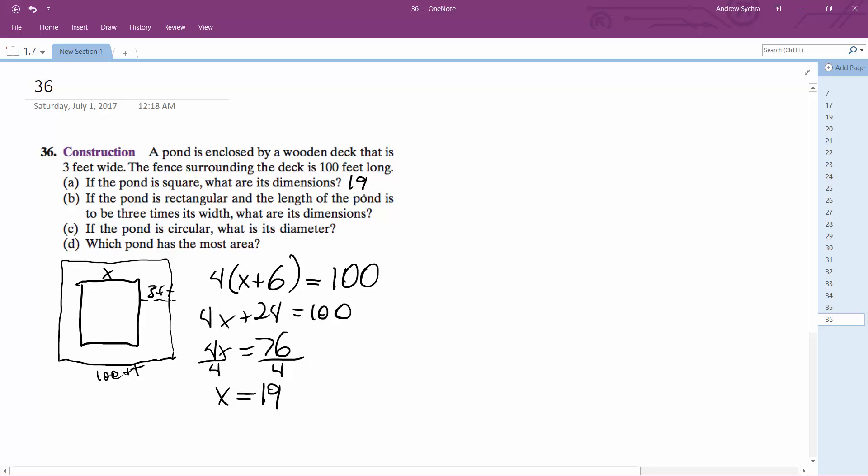If the pond is rectangular and the length of the pond is three times the width. So 3X and then X, but we still got three on each side.